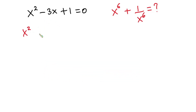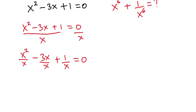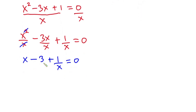We have x squared minus 3x plus 1 is equal to 0. Now let's divide each side of this equation by x. Splitting this, we have x squared over x minus 3x over x plus 1 over x equals 0. This x reduces the power by 1, giving us x minus 3 plus 1 over x equals 0. Making x plus 1 over x the subject, we get x plus 1 over x equals 3.